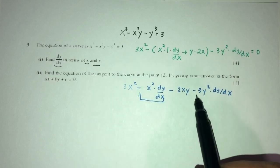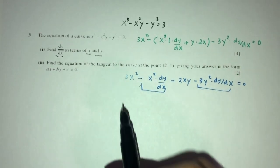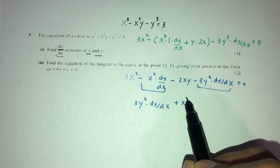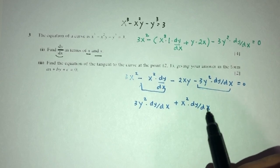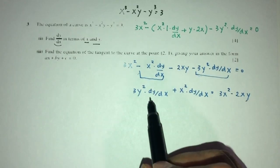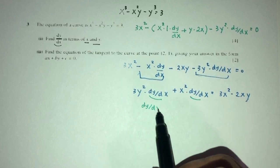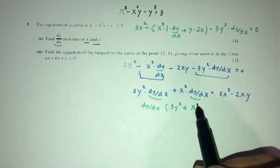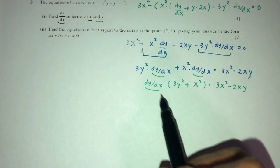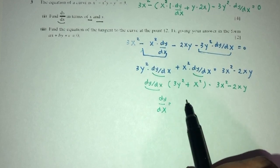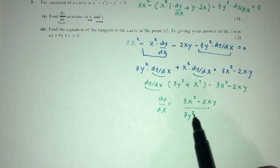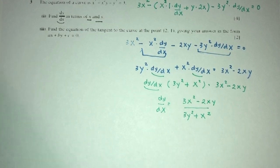We send the dy/dx terms to the other side. Since they are negative, they become positive: 3y squared dy/dx plus x squared dy/dx equals 3x squared minus 2xy. By factorization, dy/dx is a common factor, so dy/dx times (3y squared plus x squared) equals 3x squared minus 2xy. Therefore dy/dx equals (3x squared minus 2xy) over (3y squared plus x squared).